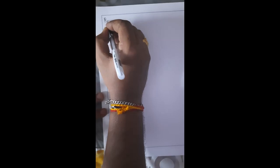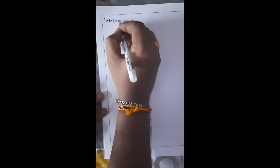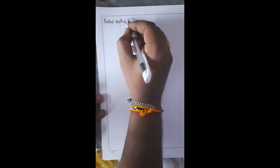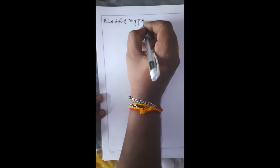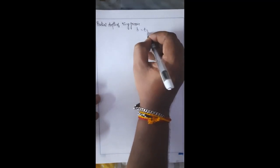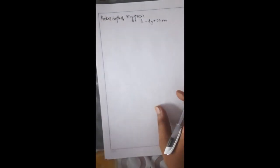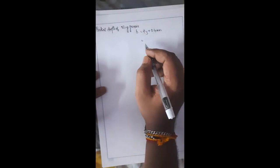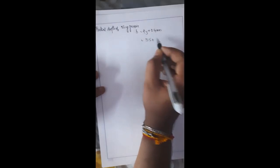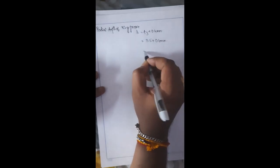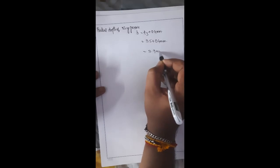The radial depth of the ring groove is given by B = t3 + 0.4 mm. With t3 ≈ 3.5 mm: B = 3.5 + 0.4 = 3.9 mm. This is the radial depth of the piston ring groove.